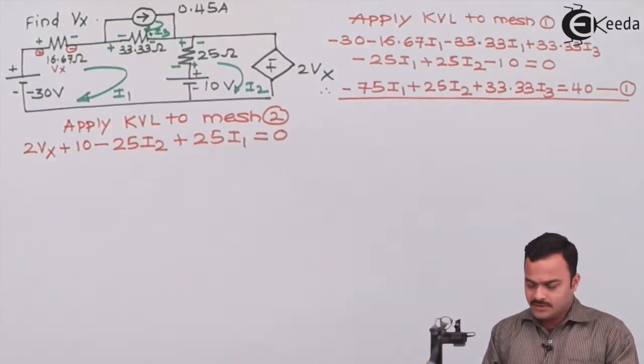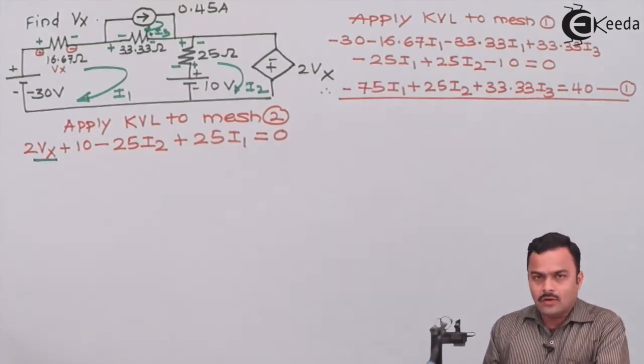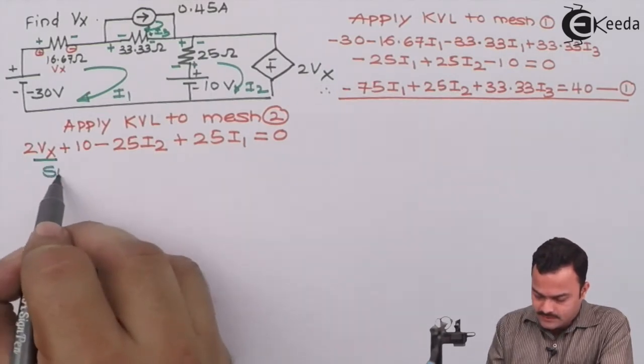Here we need a substitution equation because vx is coming over here which is not our variable as a measure, so we need a substitution equation.